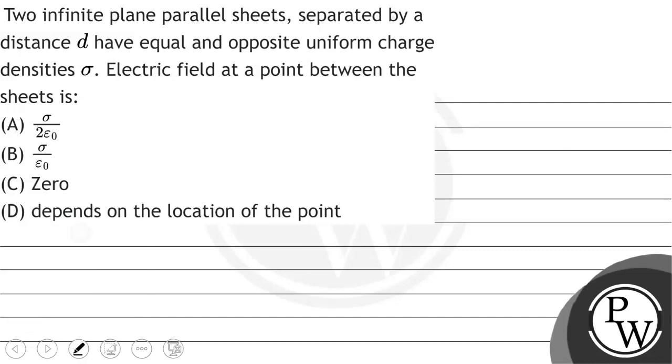Hello, let's solve this question. The question says that two infinite plane parallel sheets separated by a distance d have equal and opposite uniform charge density sigma. Electric field at a point between the sheets is: